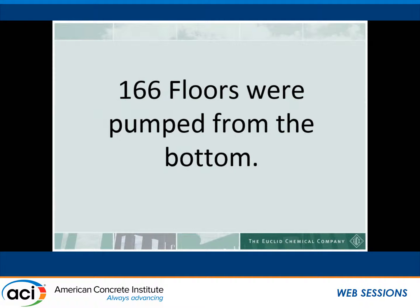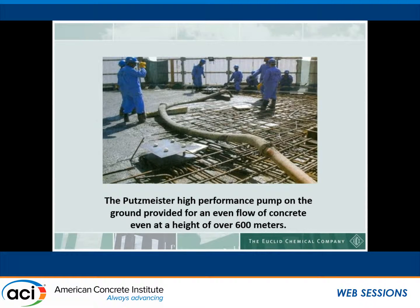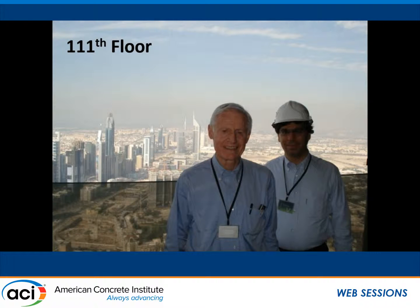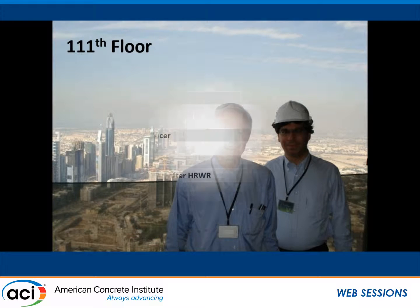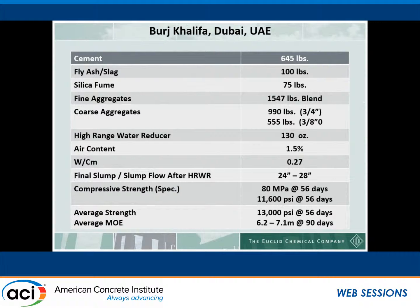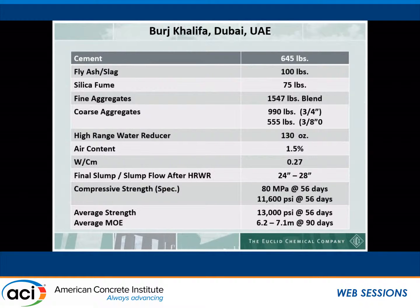This project had 166 floors, pumped from the bottom. High-performance pumping equipment was used to pump from the ground up to 600 meters with no problems and consistent flow. The mix design had 645 pounds of cement, 100 pounds of fly ash and silica fume, with fine and coarse aggregate in approximately a 50-50 blend by volume. They achieved a slump flow of 24 to 28 inches in diameter. Compressive strength averaged around 13,000 PSI at 56 days, with an average modulus of elasticity at 90 days of 6.2 to 7.1.